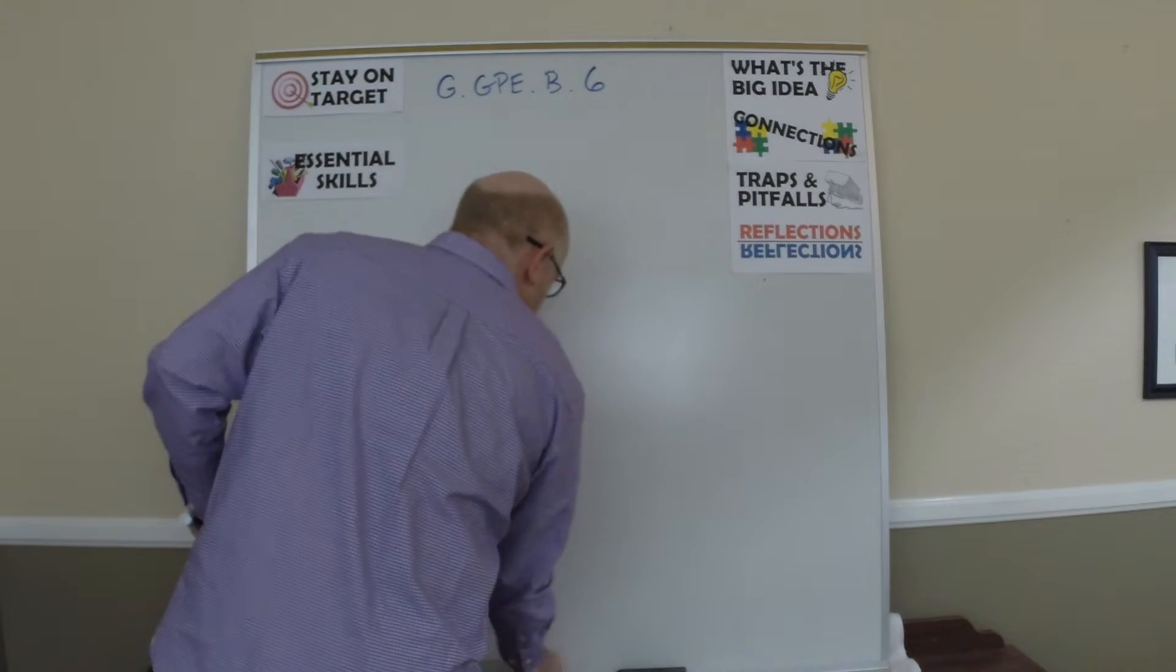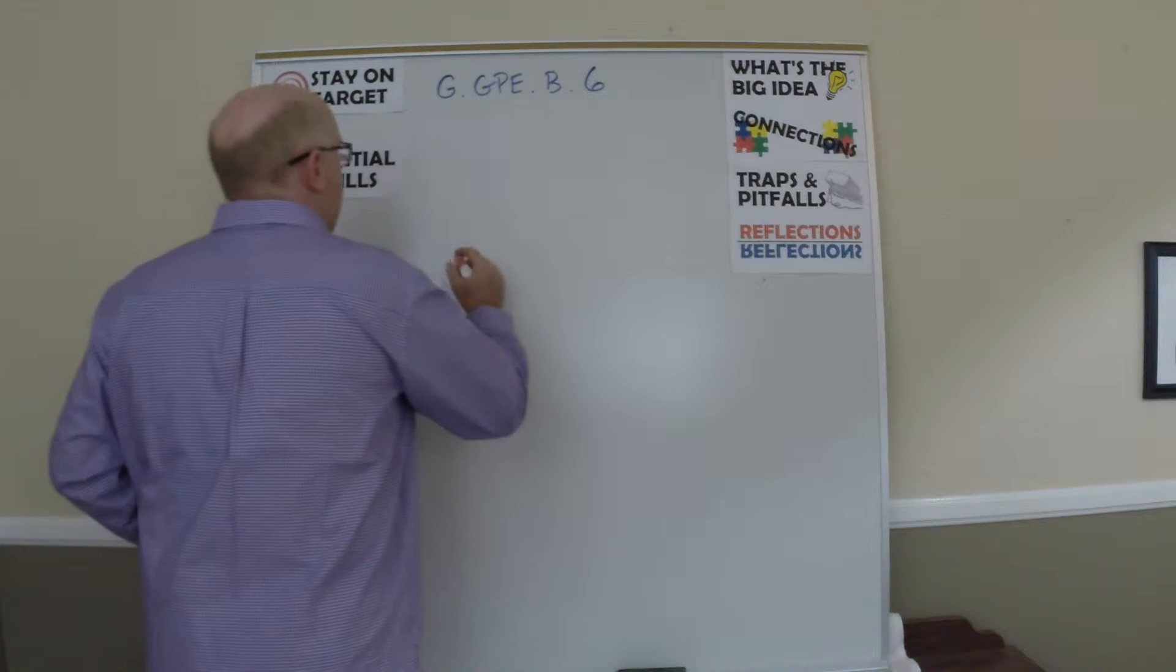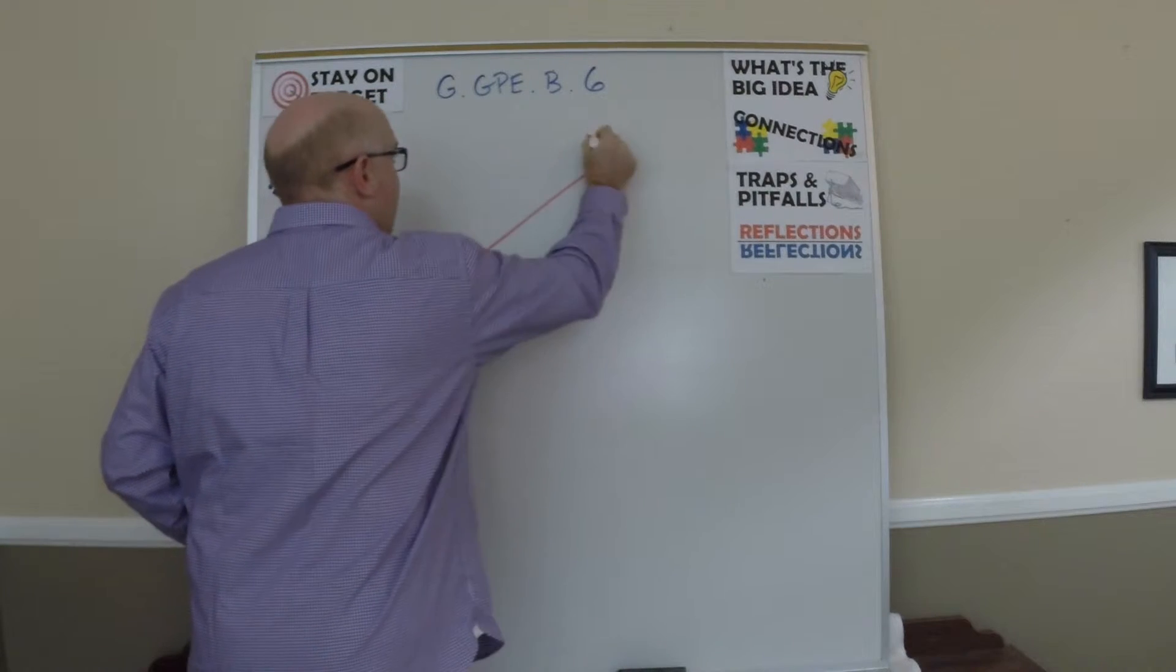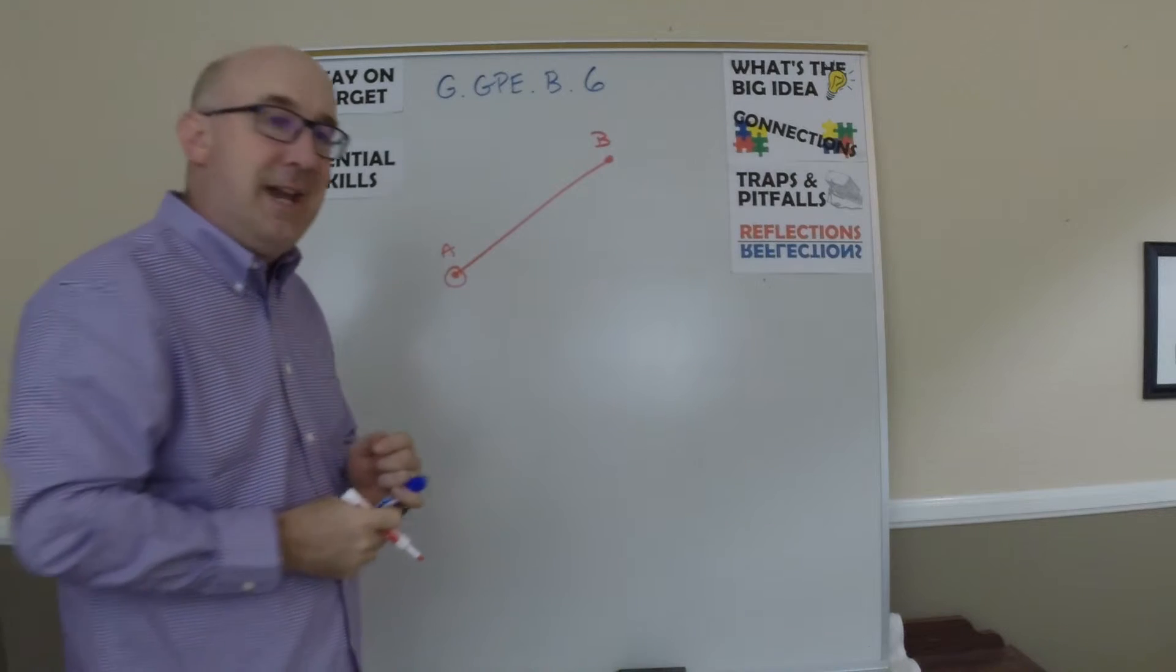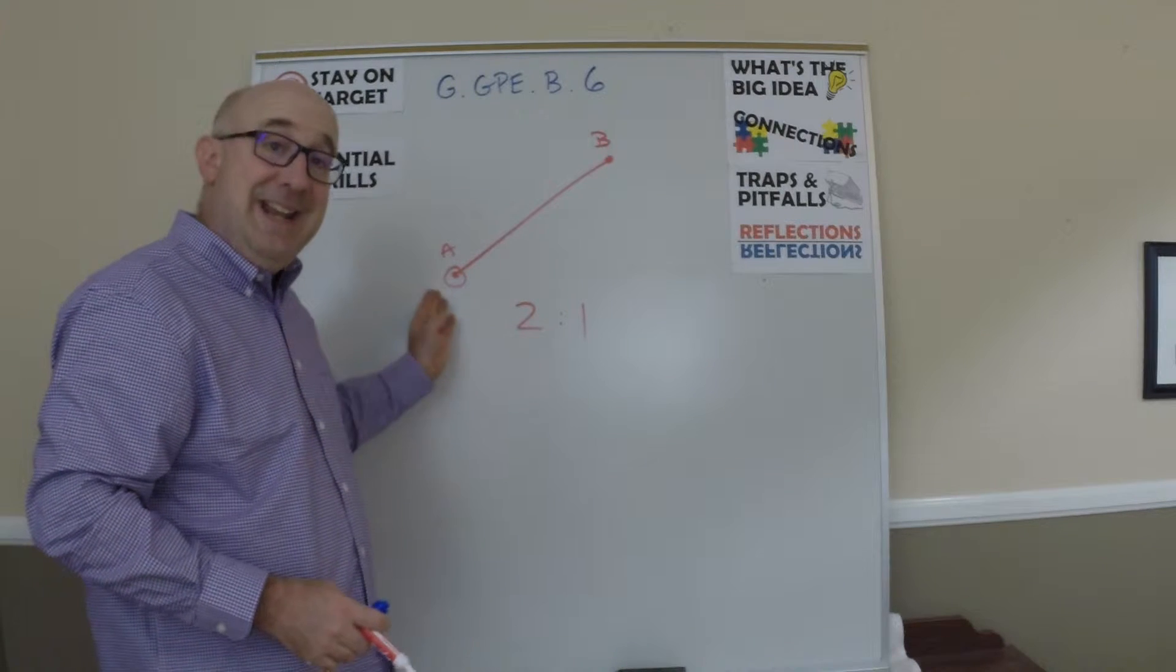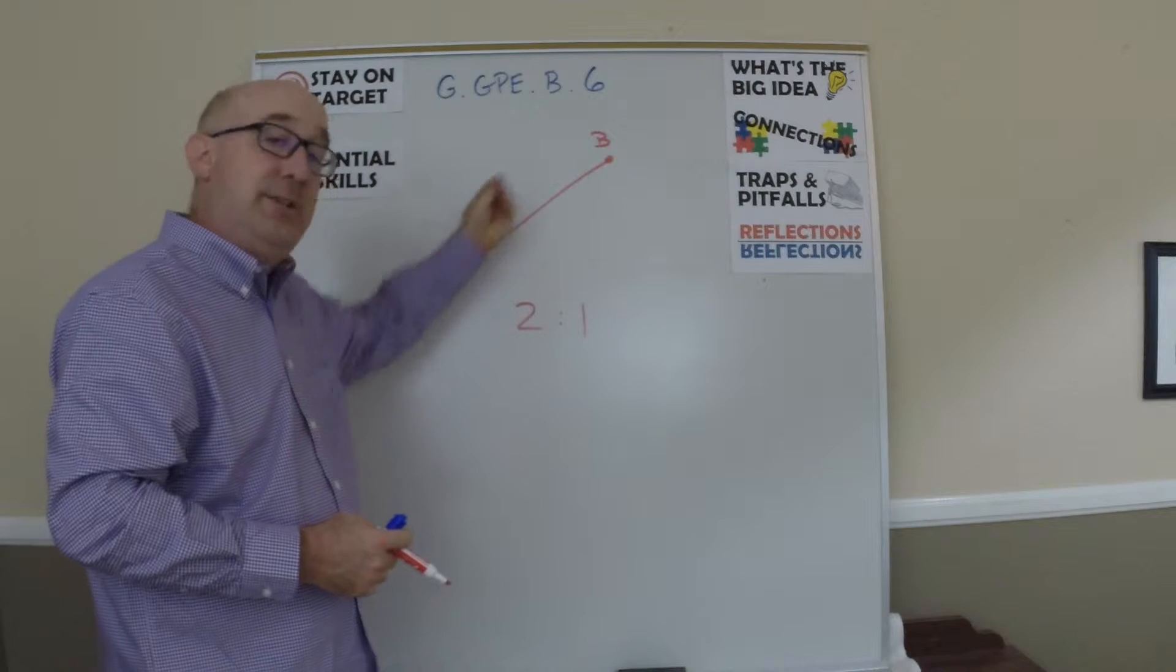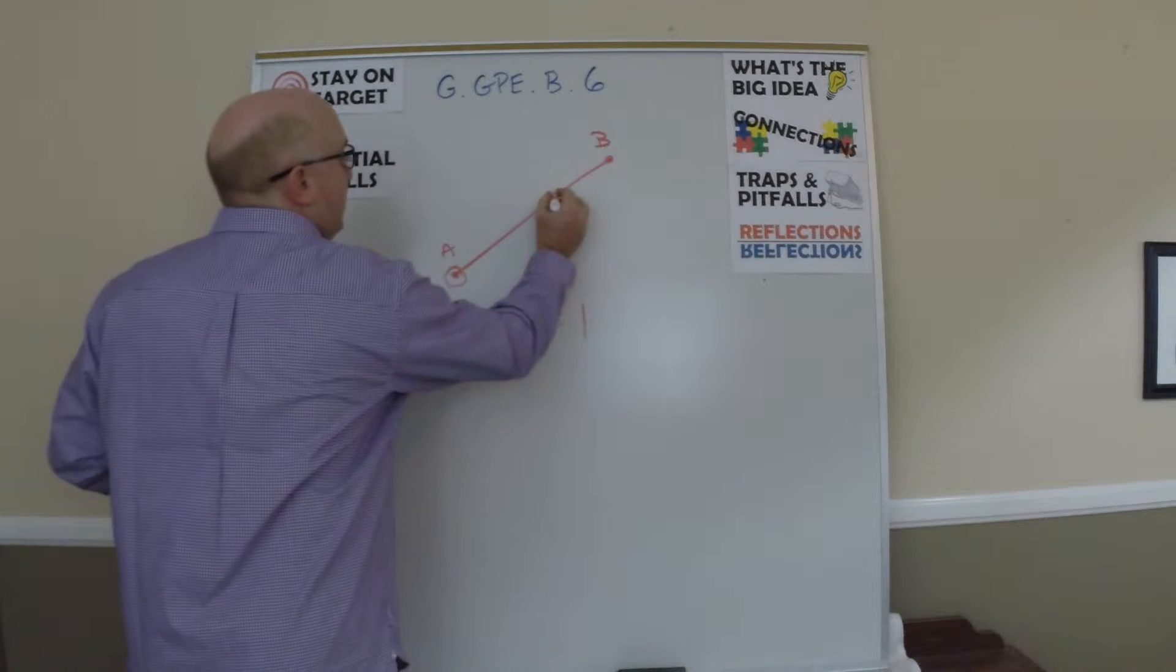But the idea here, there are a couple of tricks to it. First of all, they call it a directed line segment because there's a beginning and an end. If you are partitioning a line segment in a two to one ratio, the two comes at the beginning of the directed line segment. So this would be line segment A to B. This is the beginning, this is the end. So we would be partitioning it so that the two part is here and the one part is here.